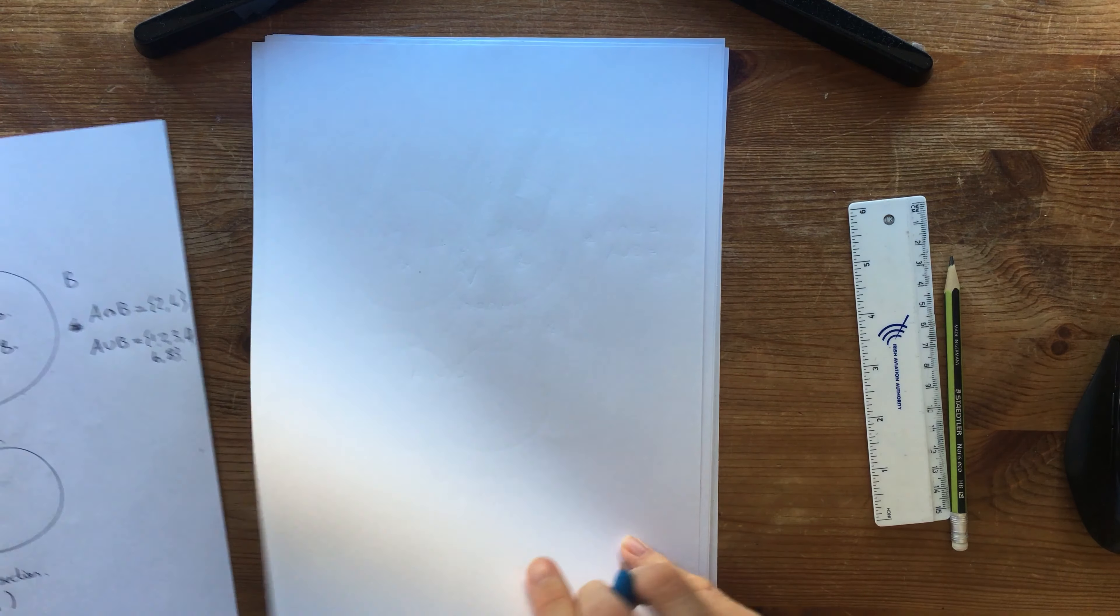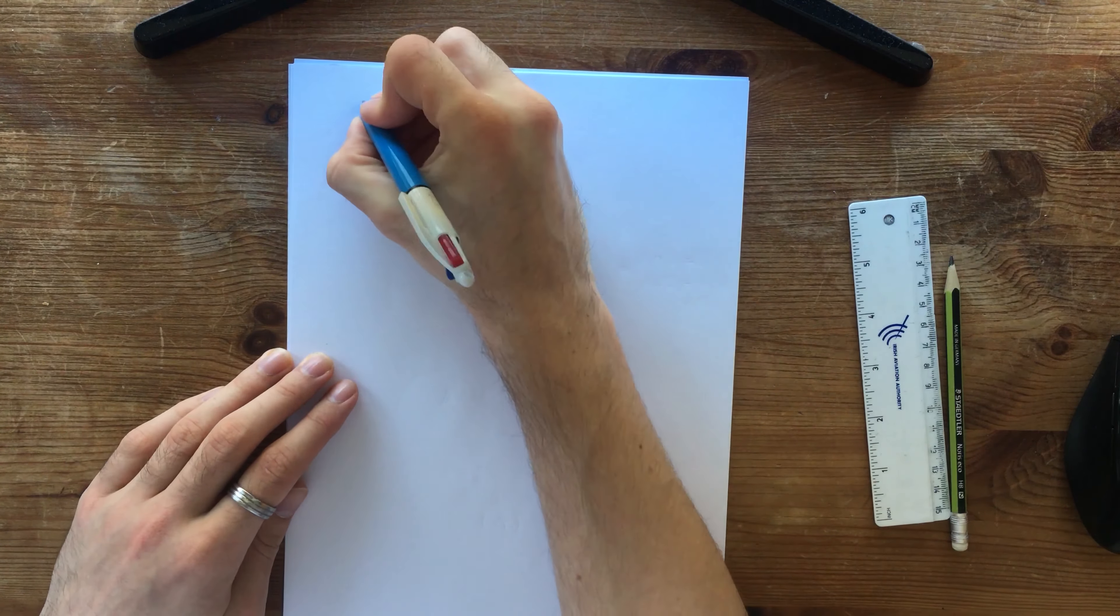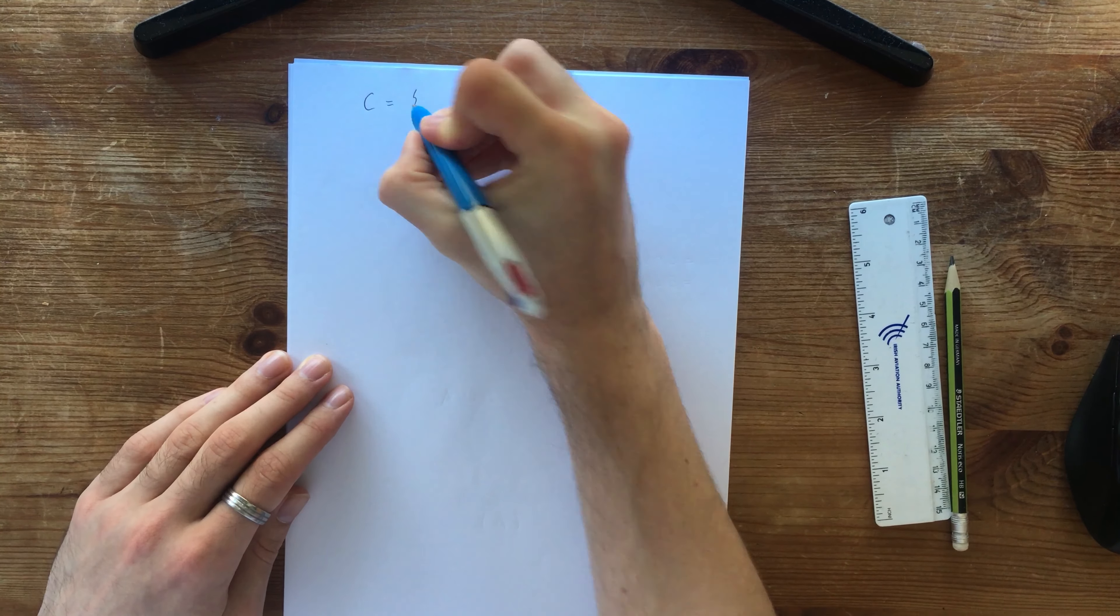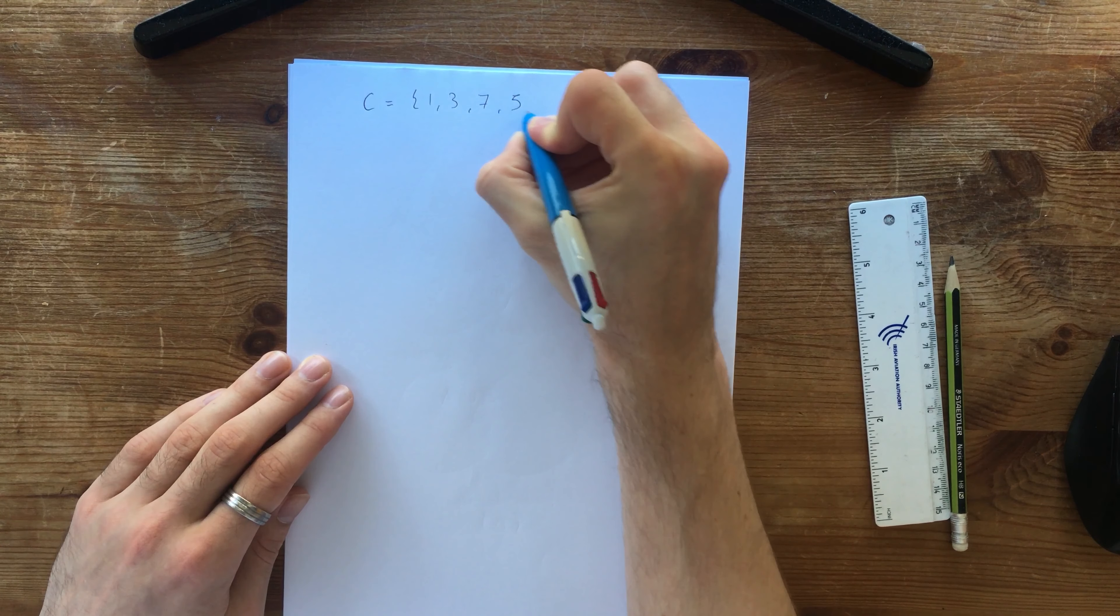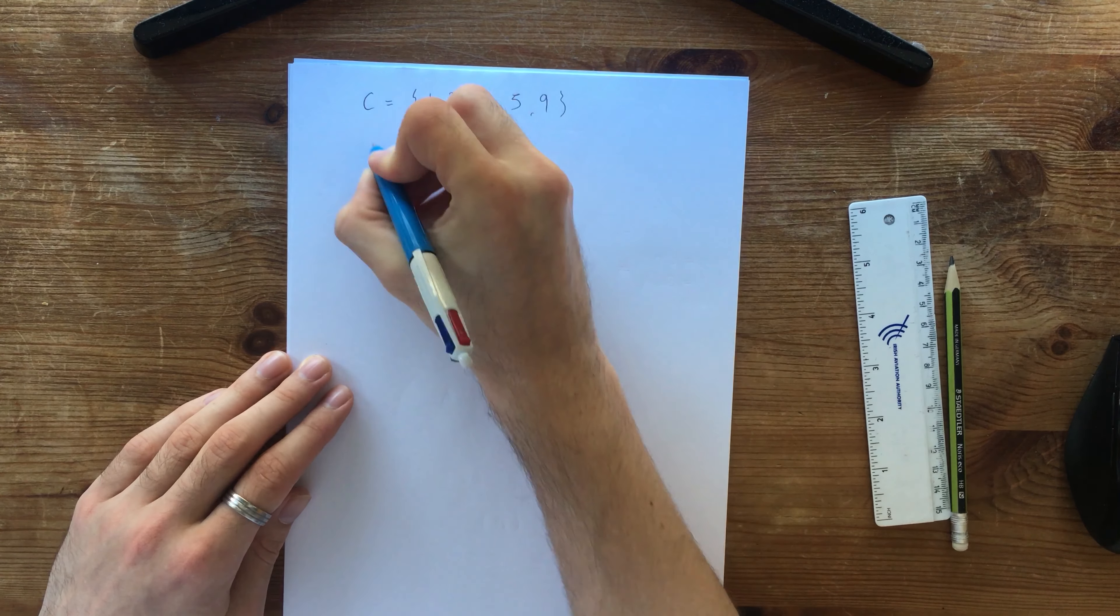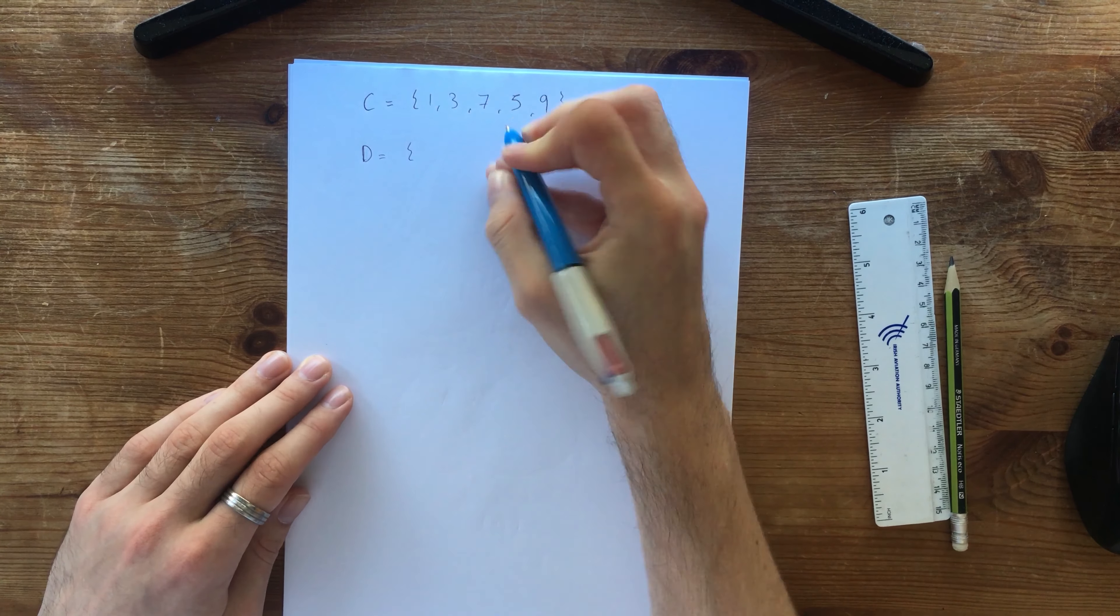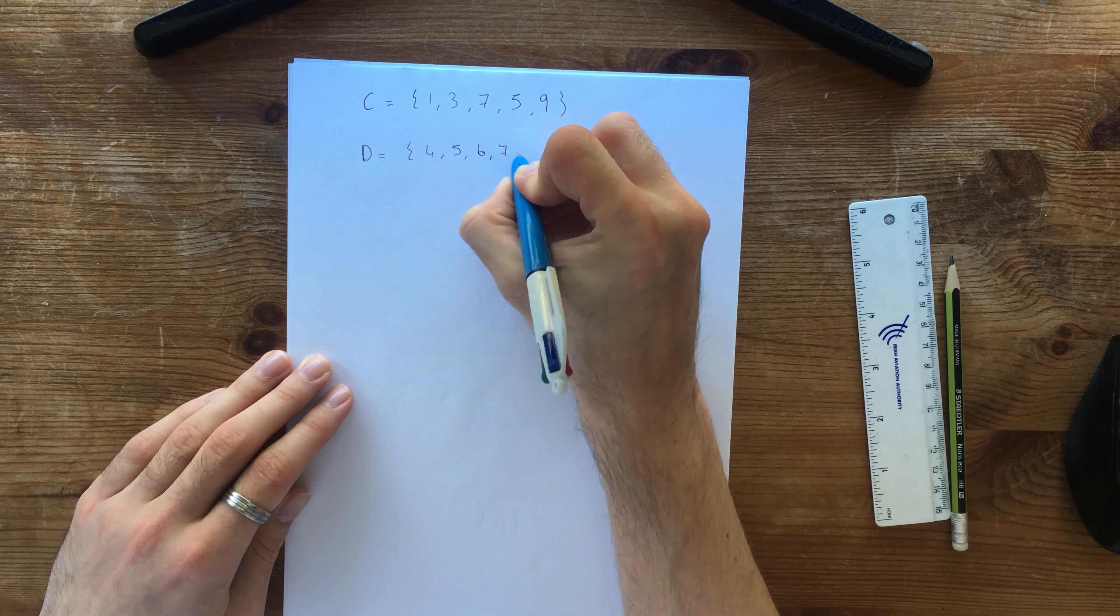So let's just do a little example before we move on. If I have a set, let's call it C. And it is 1, 3, 7, 5, 9. And we've got D which is going to be 4, 5, 6, 7, 8.